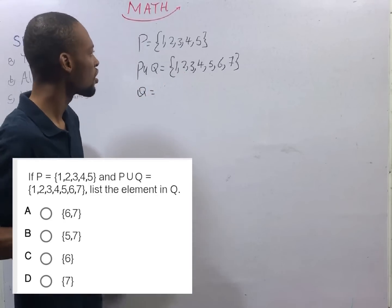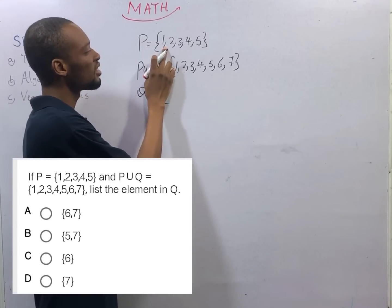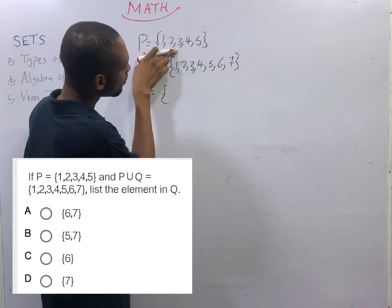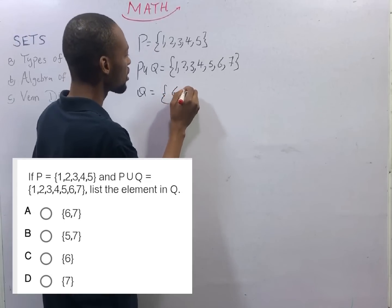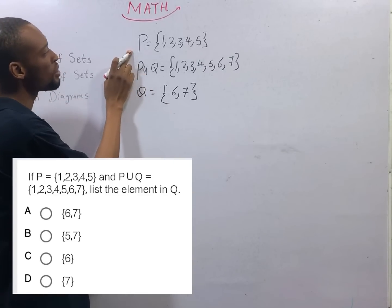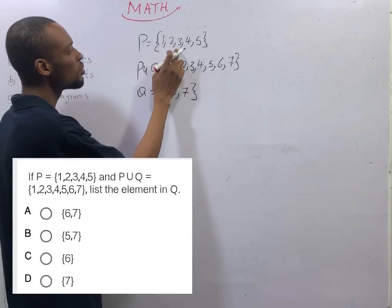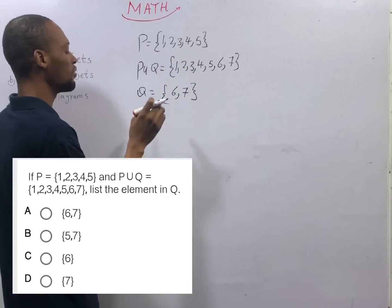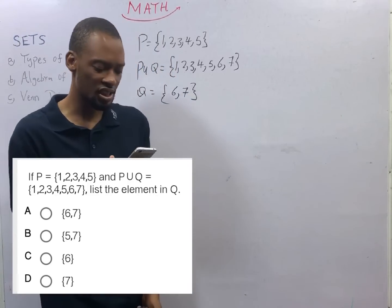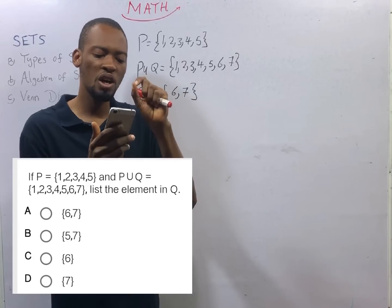Q will simply be what is here that is not here. For example, we have 1, 2, 3, 4, and 5. Q will be 6 and 7. That is correct. Why? If Q is 6 and 7, and P is 1, 2, 3, 4, 5, P union Q will simply be 1, 2, 3, 4, 5, 6, 7. That is the correct option. And in this type of questions, the easiest way to answer it is, they say you should find Q. You have P. So for each of the options, do P union Q. Which of them will give you these values?